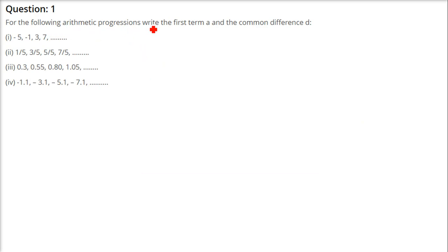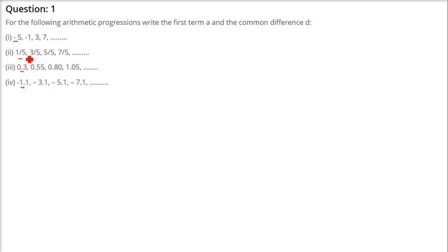For the following arithmetic progressions, write the first term A and the common difference D. The first term is always the first element in all cases.